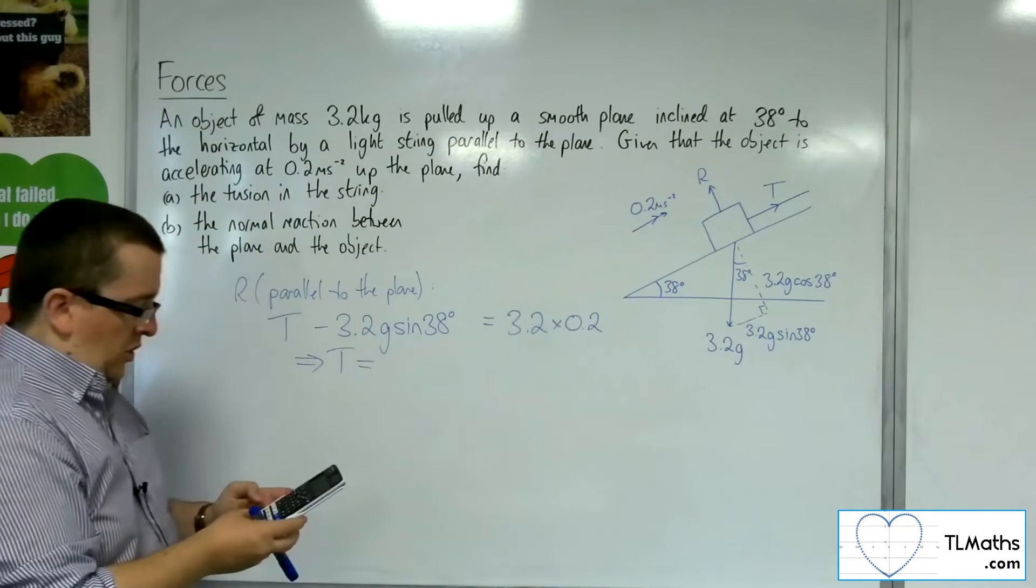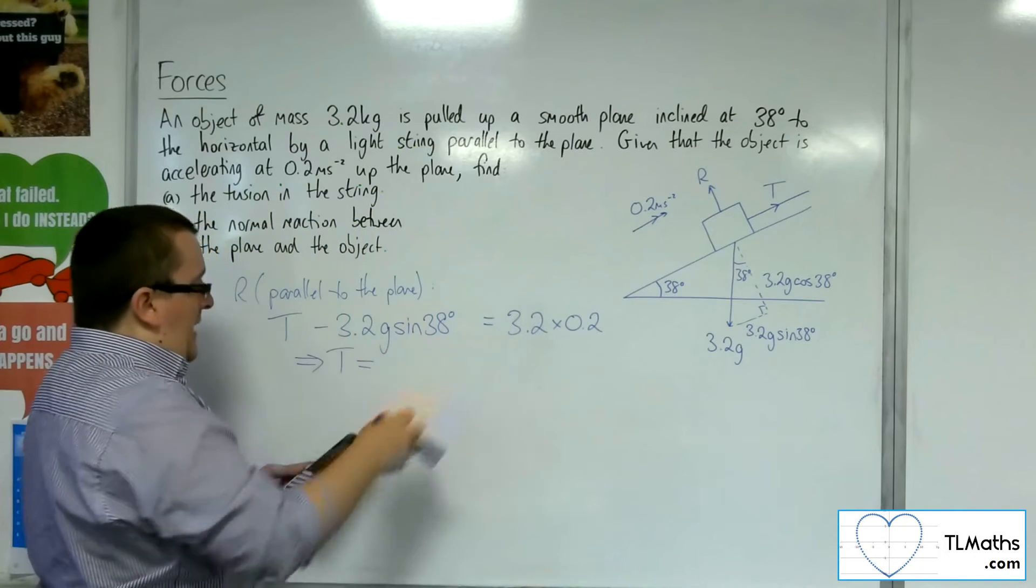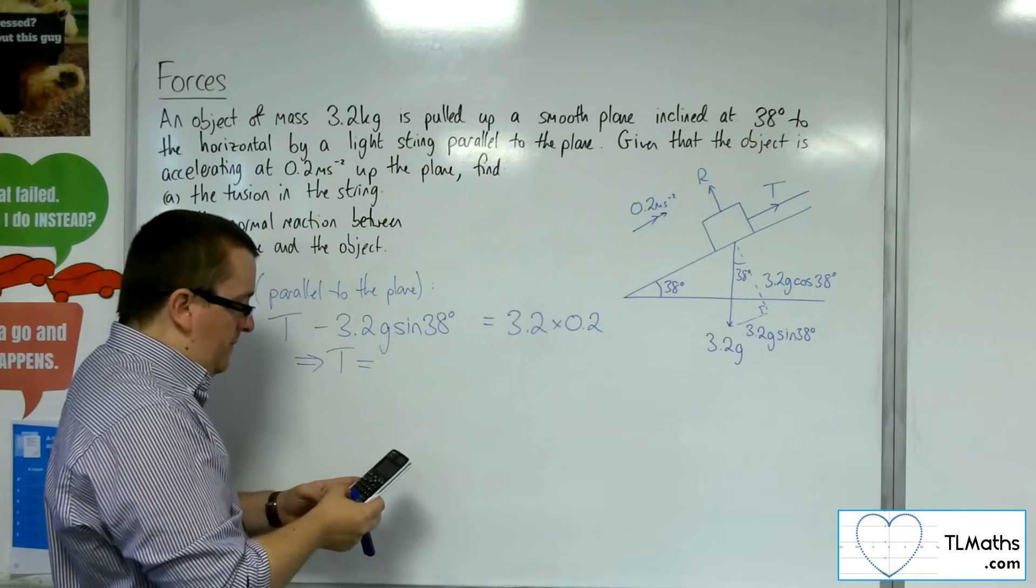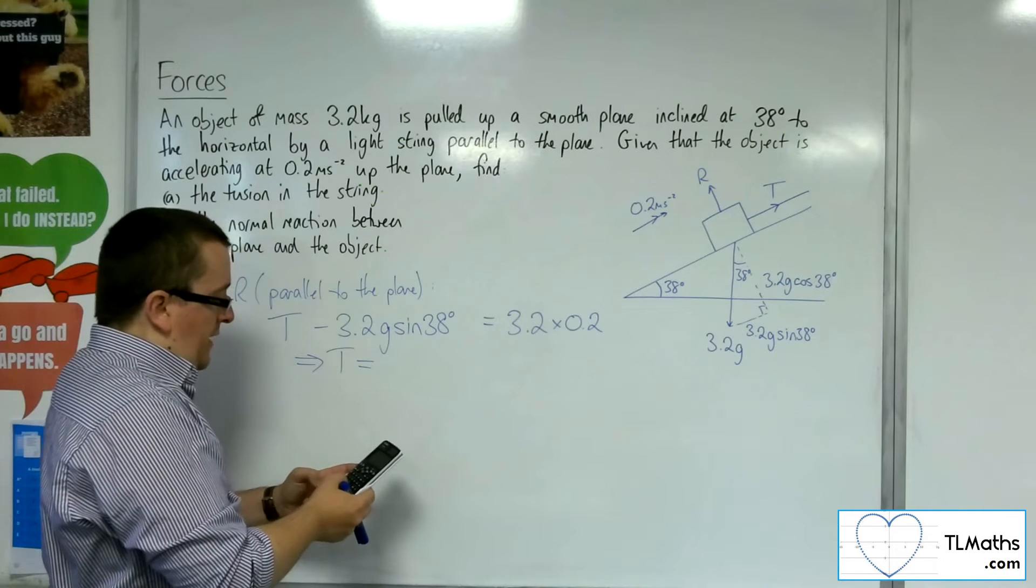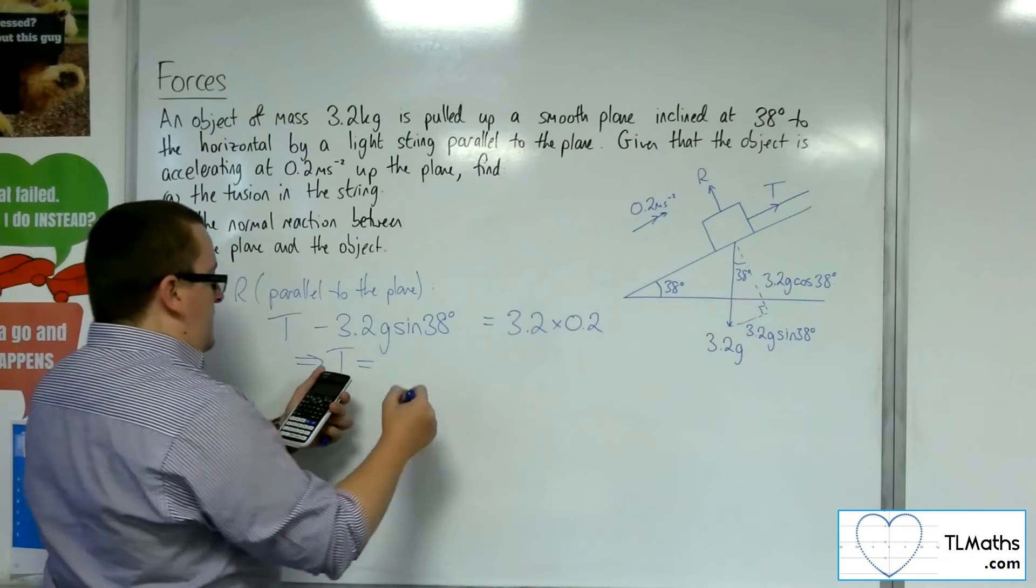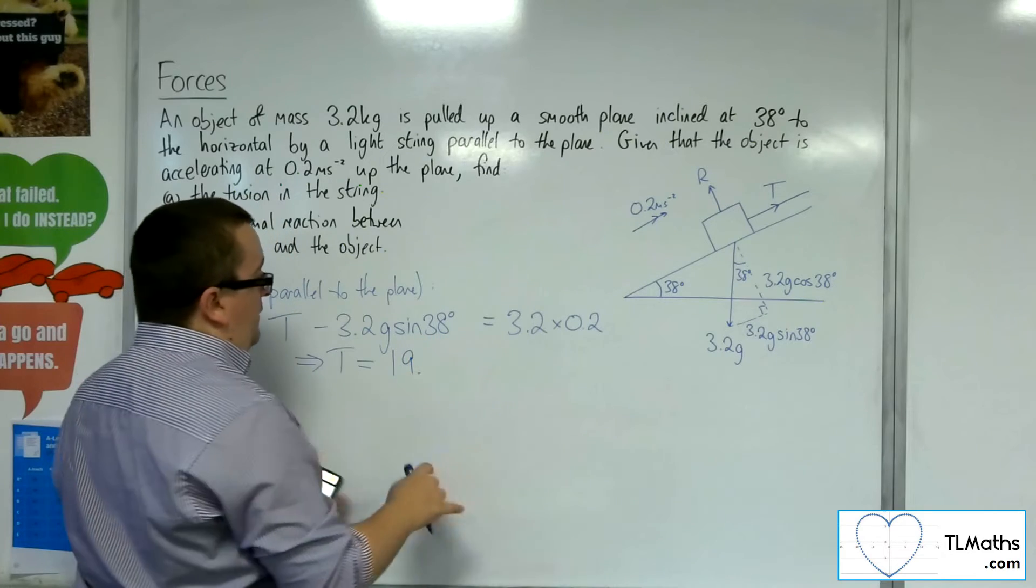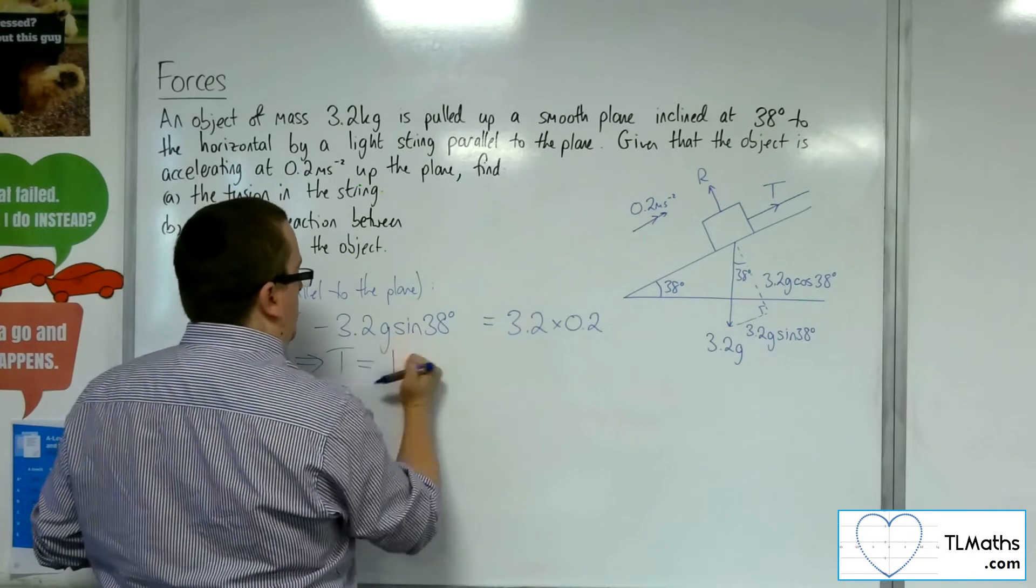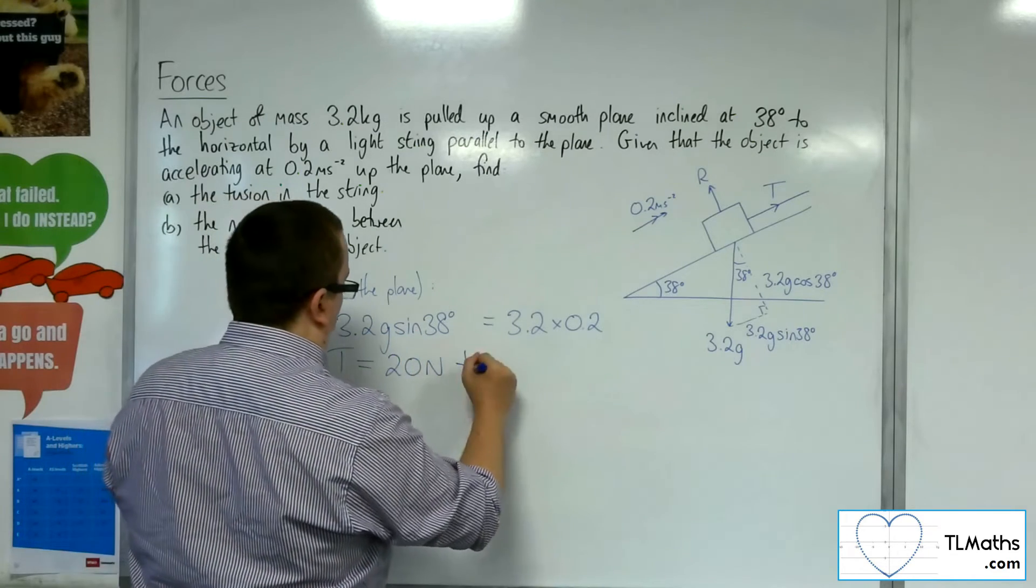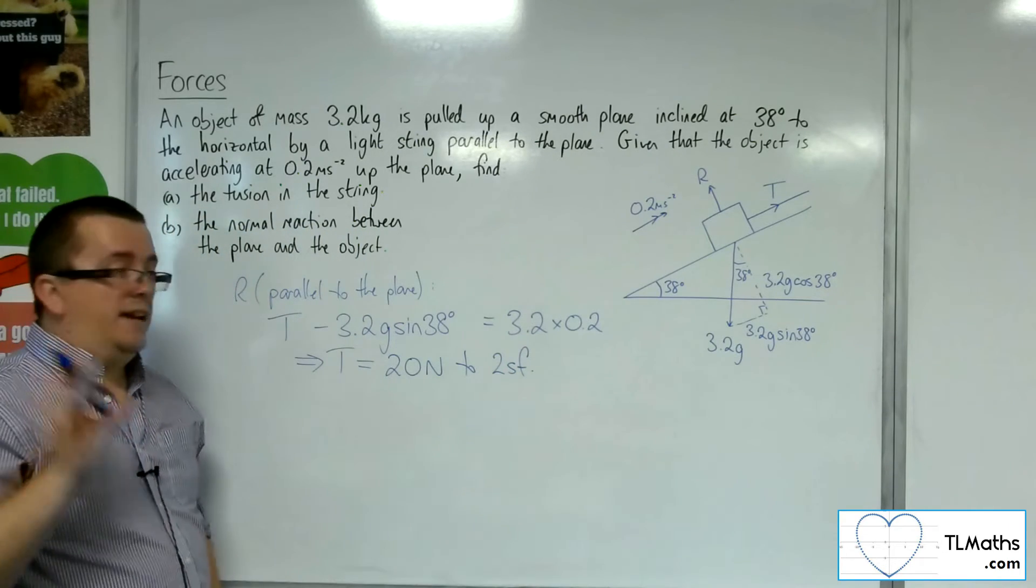So if I do the 3.2 times the 0.2, that's 0.64, and I'm going to add 3.2 times, I'm going to use g is 9.8, 9.8 times sine of 38 degrees. And that gets me 19.947. So I'm going to put that to two significant figures, which will give me 20 newtons to 2 sig fig. So that's my tension.